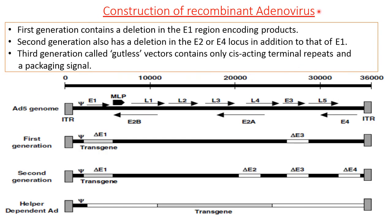Now, the construction of recombinant adenovirus: the genome of adenovirus consists of all genes — E1, E2A, E2B, E3, and E4. To construct the first-generation recombinant adenovirus, the E1 region encoding product is deleted. In the second generation, the E2 or E4 region is deleted along with the E1 region.